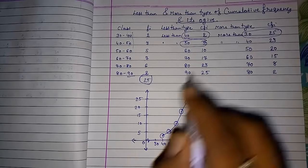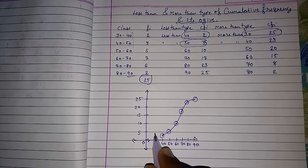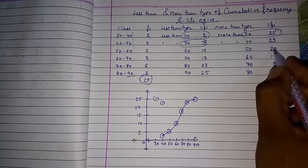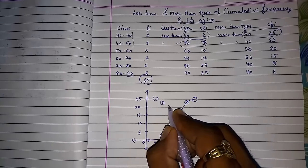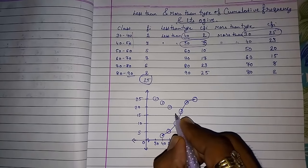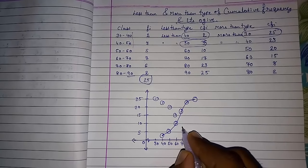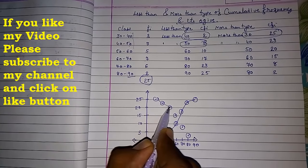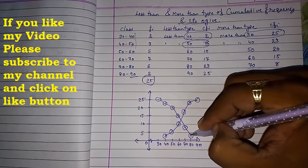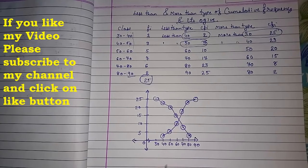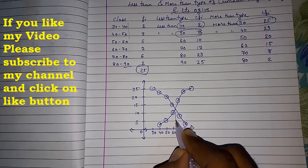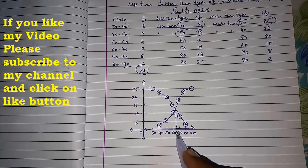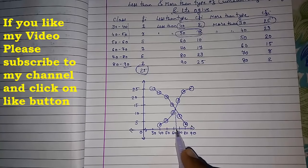Now for more than type, the coordinates are: (30, 25), (40, 23), (50, 20), (60, 15), (70, 8), (80, 2). The more than ogive starts from the upper side and goes downward. Now I have to draw a line passing through these points. Where the two curves intersect, draw a straight line down to the x-axis. Approximately, I can see it is somewhere near 64. So the median is approximately 64.